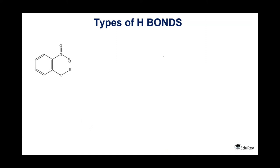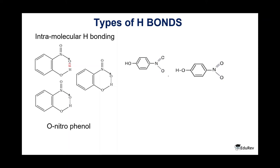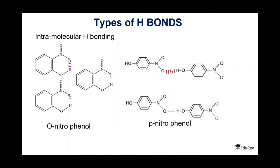There are two types of hydrogen bonding. In ortho-nitrophenol, the hydrogen bond exists between the oxygen and hydrogen of the same molecule — this is called intramolecular hydrogen bonding. In para-nitrophenol, there is no scope for hydrogen bonding within the molecule, but when two different molecules are placed together, hydrogen bonding can exist between them — this is called intermolecular hydrogen bonding.